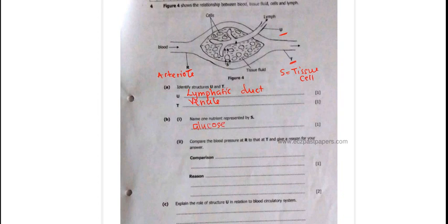And then question 4B2 says, compare the blood pressure at R and to that at T and give a reason for your answer. We are comparing the arterial and we are also comparing the tissue cell, which is R and T.